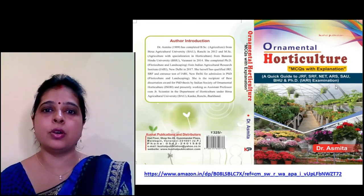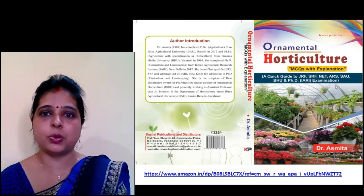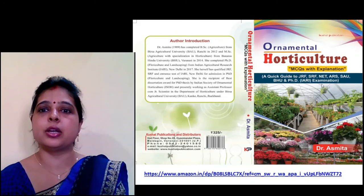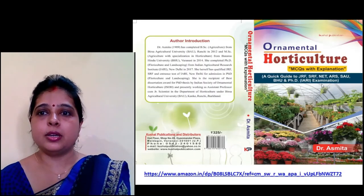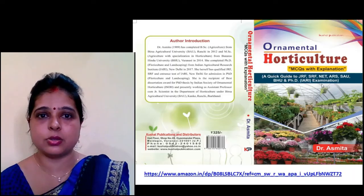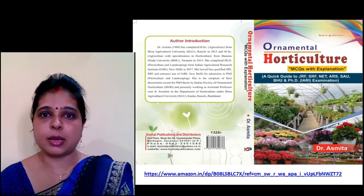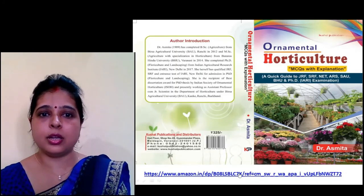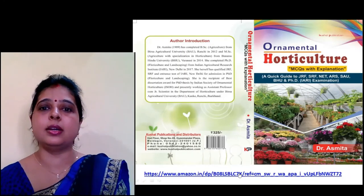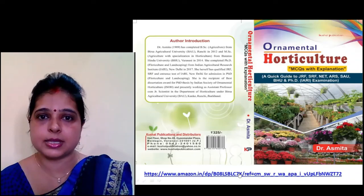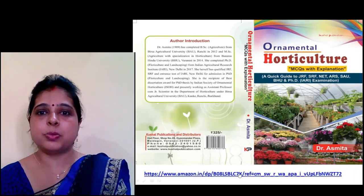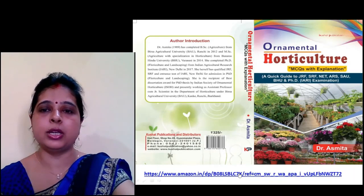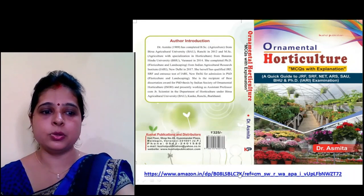Students preparing for the GRF examination can refer to the book on ornamental horticulture, which is an MCQ book with explanations. Selected questions with explanations are included for quick recapitulation before examinations, available on Amazon. This book is also useful for fourth-semester B.Sc. Agriculture students for the course on production technology for ornamental crops, MAP, and landscaping.